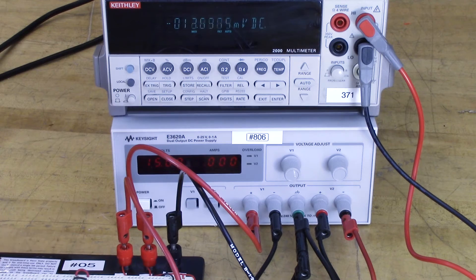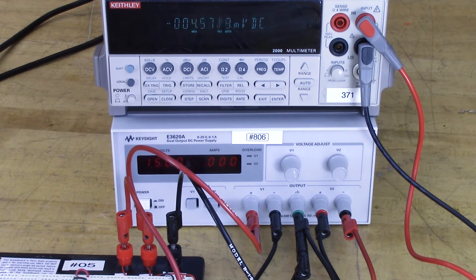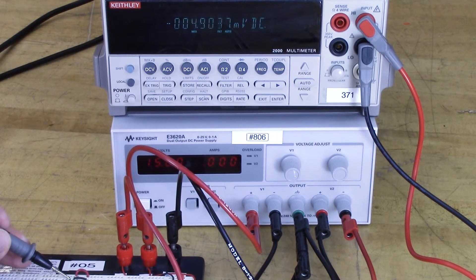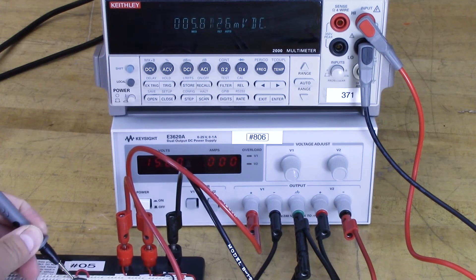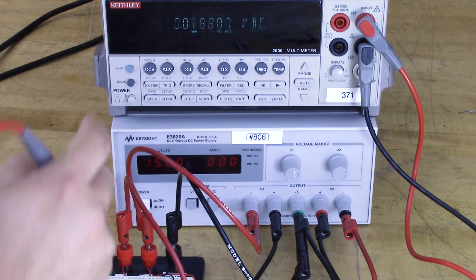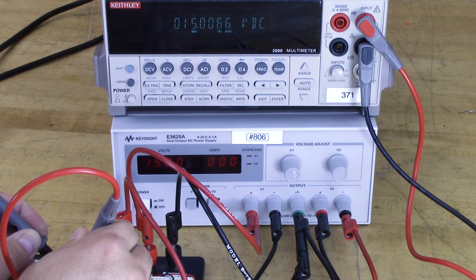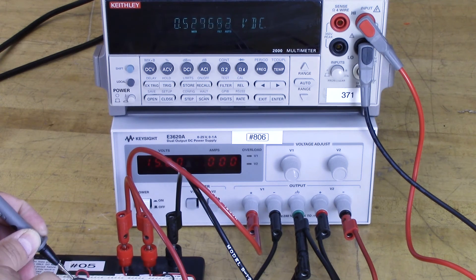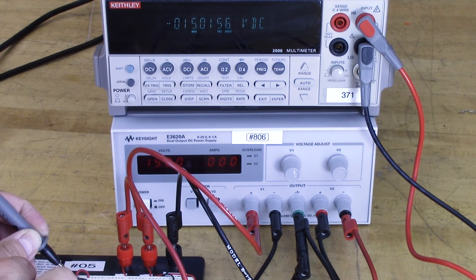So again, this is a plus minus 15 volt, and I'm going to measure on the breadboard from reference to ground. So I've got my positive 15 volts, as you can see up here on the multimeter, there's a positive 15 volts, and my other is negative 15 volts.